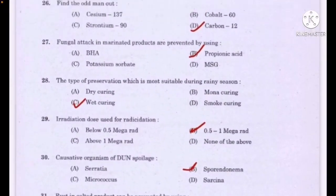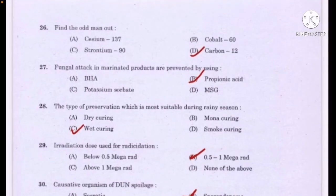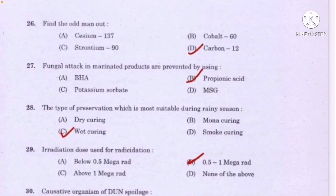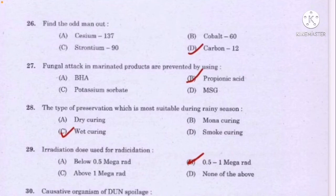Find the odd man out — correct answer option D: carbon-12. Fungal attack in marinated products is prevented by using — correct answer option B: propionic acid. The type of preservation most suitable during rainy season — correct answer option C: wet curing. Irradiation dose used for radicidation — correct answer option B: 0.5 to 1 megarad.